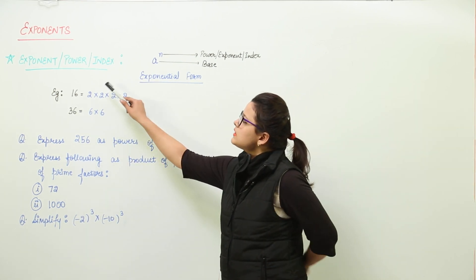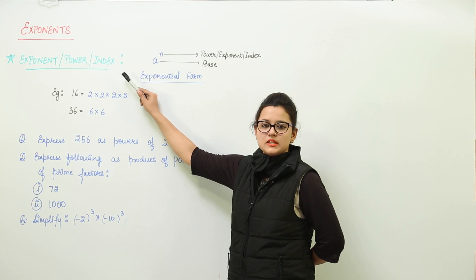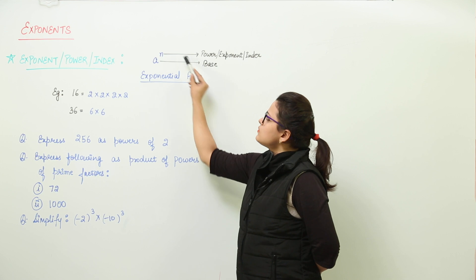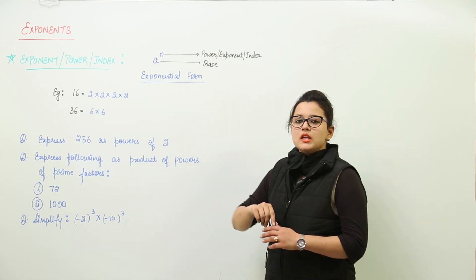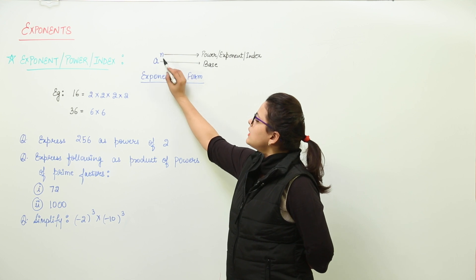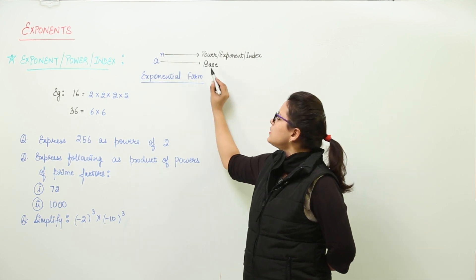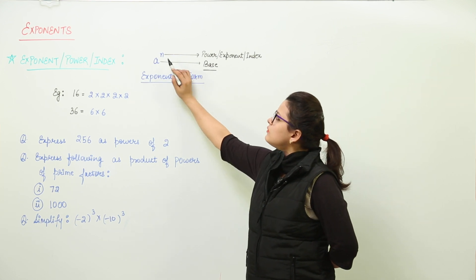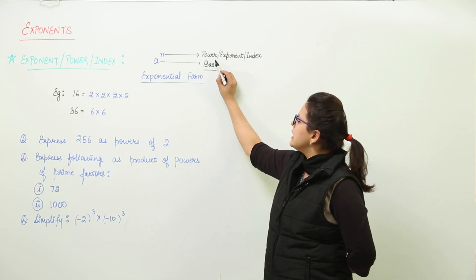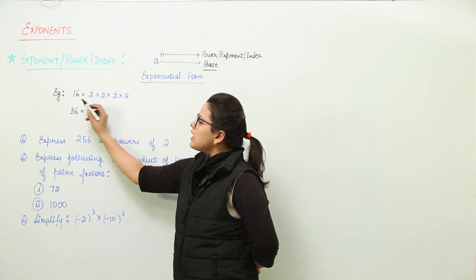Exponents, power, or index all represent the same thing. In exponential form notation, there are two values: one is 'a' (the base) and the other is written above 'a'. The value written above the base is known as the index, power, or exponent.